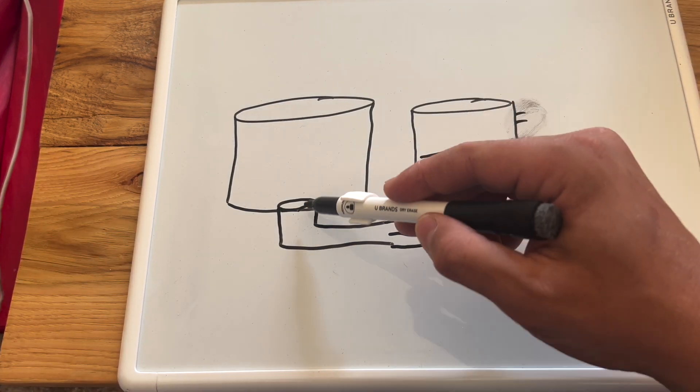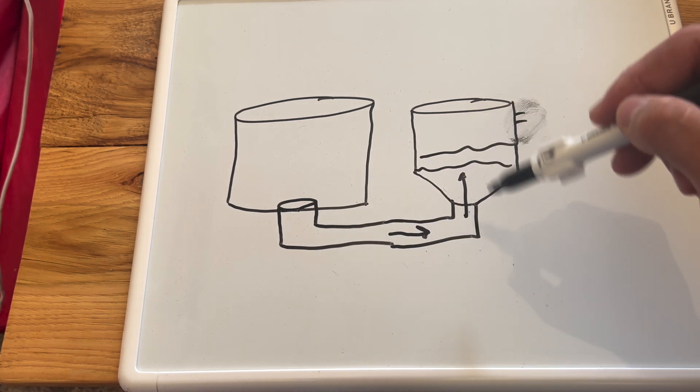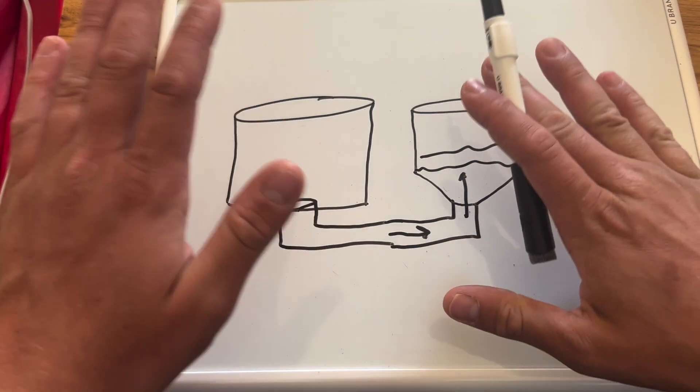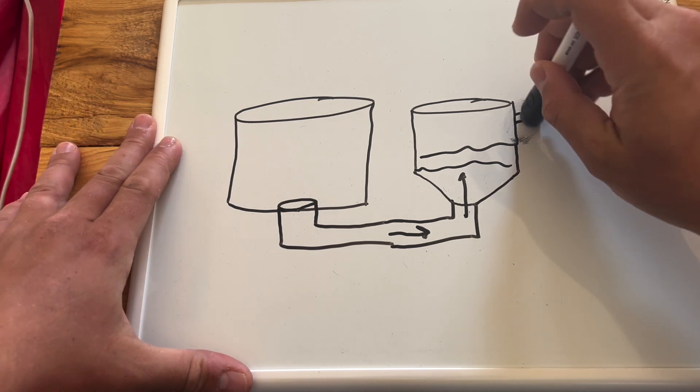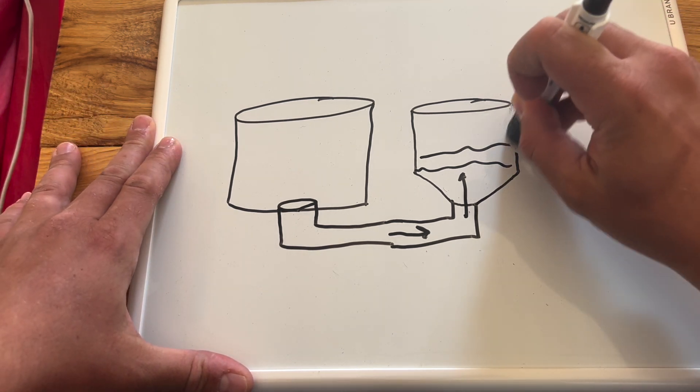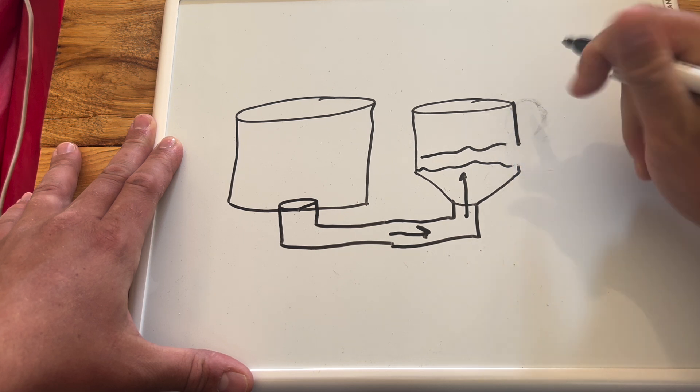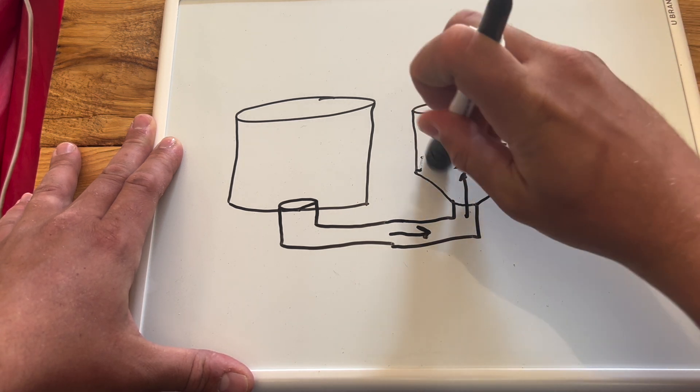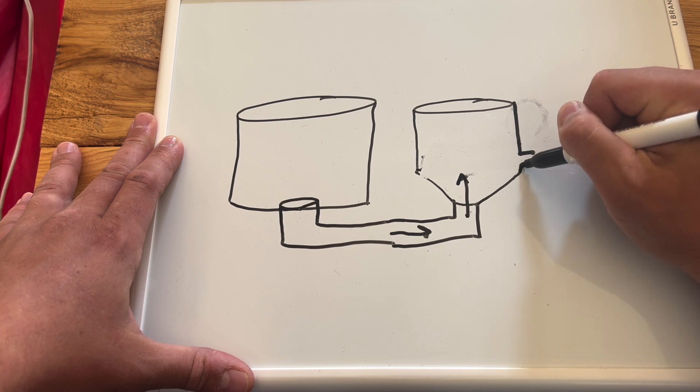The catch here is that if you connect a center-bottom draining fish tank to the bottom of another container, they essentially function as one container. So what that means is, let's say that this drain here exiting this tank, and I'm going to get rid of this stuff here just so it doesn't confuse you. Let's say that this drain is this low.